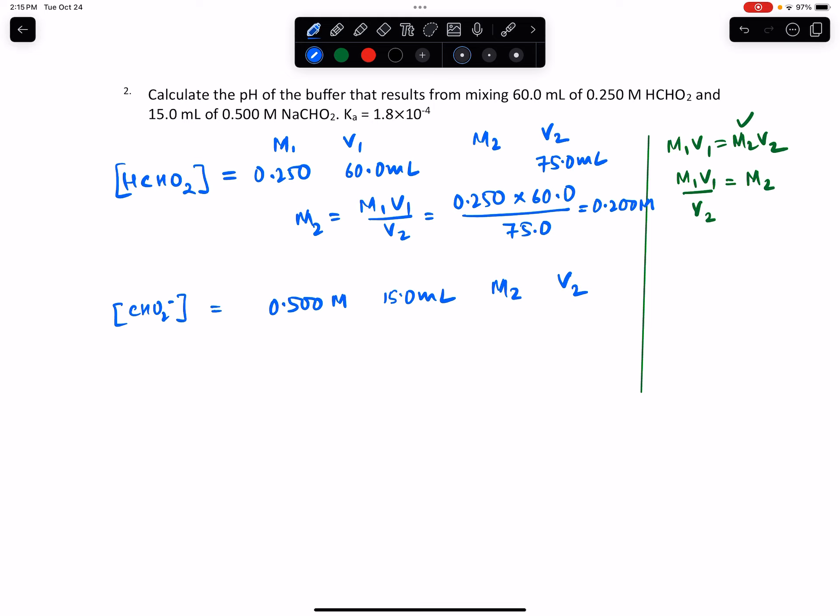Using the same logic, M2 = M1V1/V2 = (0.500 × 15.0)/75.0, which gives us a concentration of 0.100 molar. We now have the new concentration of the acid and the new concentration of the conjugate base.